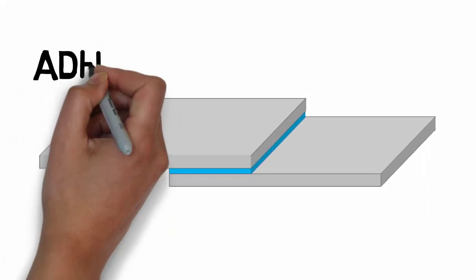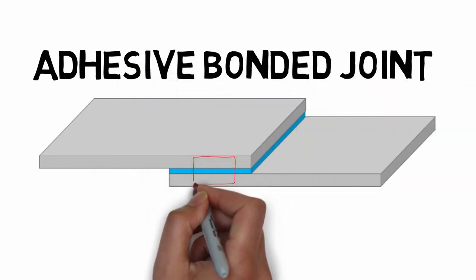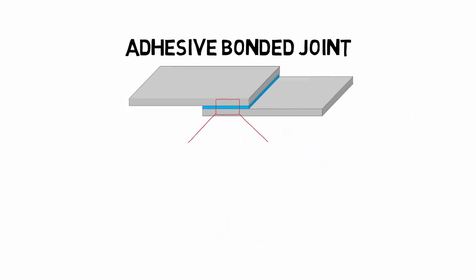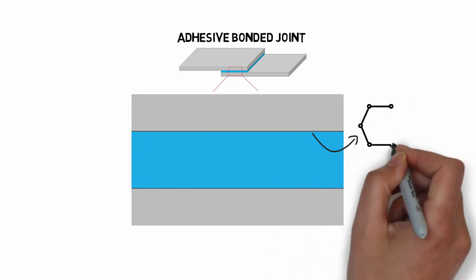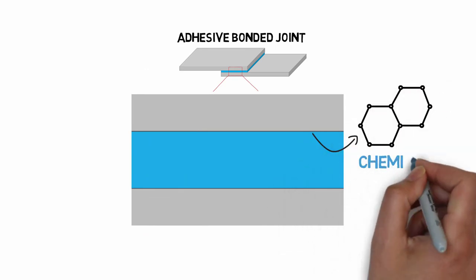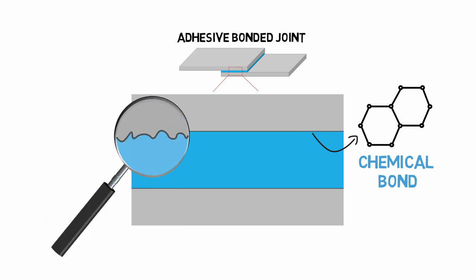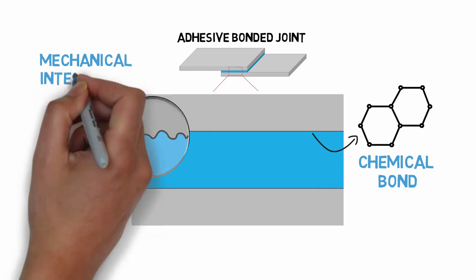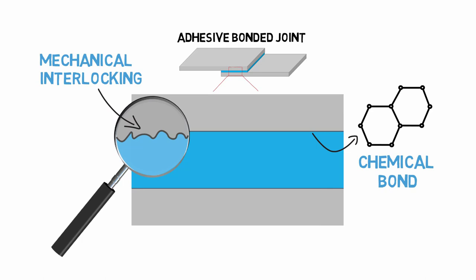An adhesive bonded joint relies on an adhesive material to join the two parts together. If we look closely at how this adhesive material connects to the parts it is joining, we can see that two different mechanisms for transferring load come into play. First, the adhesive material forms a chemical bond with the part it is joining. These chemical bonds and their strength will be dependent on the bonding process and the compatibility of the adhesive and joining material. Second, the adhesive material will flow into the nooks and crannies of the microscopically rough surface to be joined, and will then mechanically interlock with this surface roughness, allowing some load transfer through mechanical interlocking.